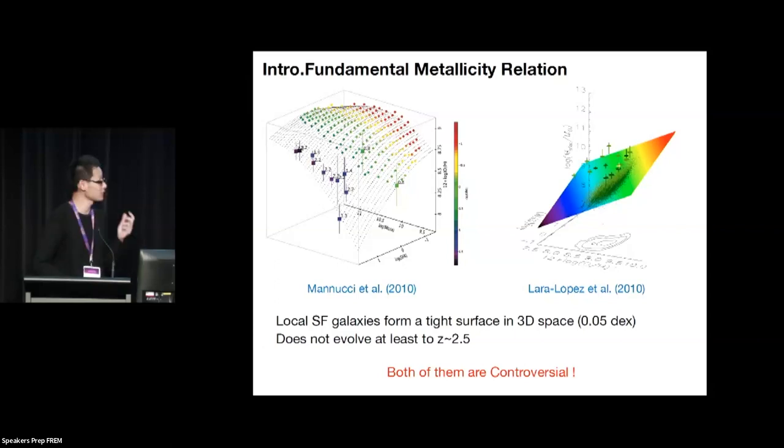In 2010, two different groups simultaneously find this result. When they put the star formation rate into consideration, they find that in this 3D diagram all the galaxies just form a very tight plane, and this is very tight - the scatter is only about 0.05 dex.